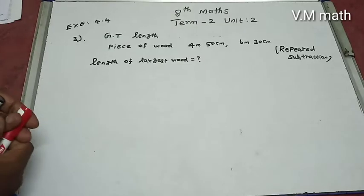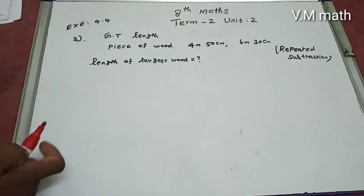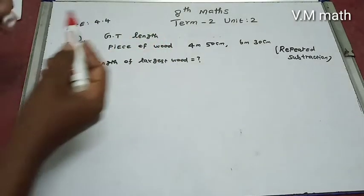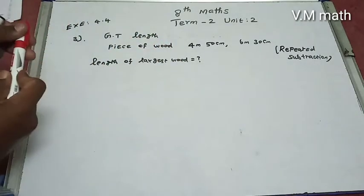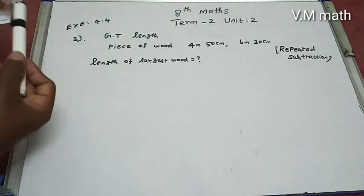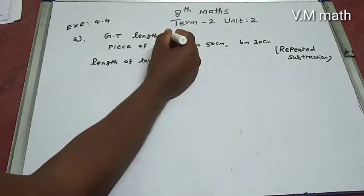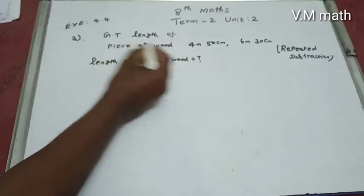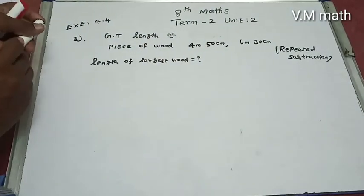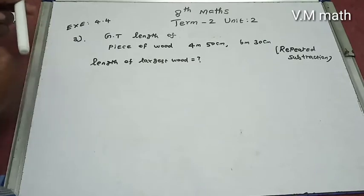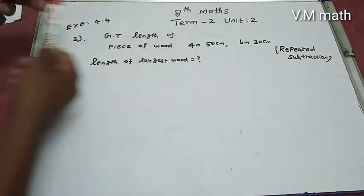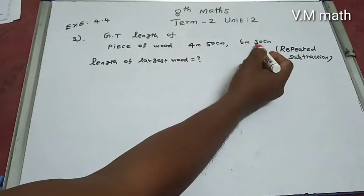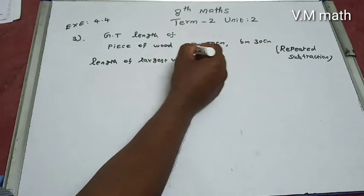X is 4.4. The third question: given the length of a piece of wood — 4 meters 50 centimeters, the next one 6 meters 30 centimeters, and so on.